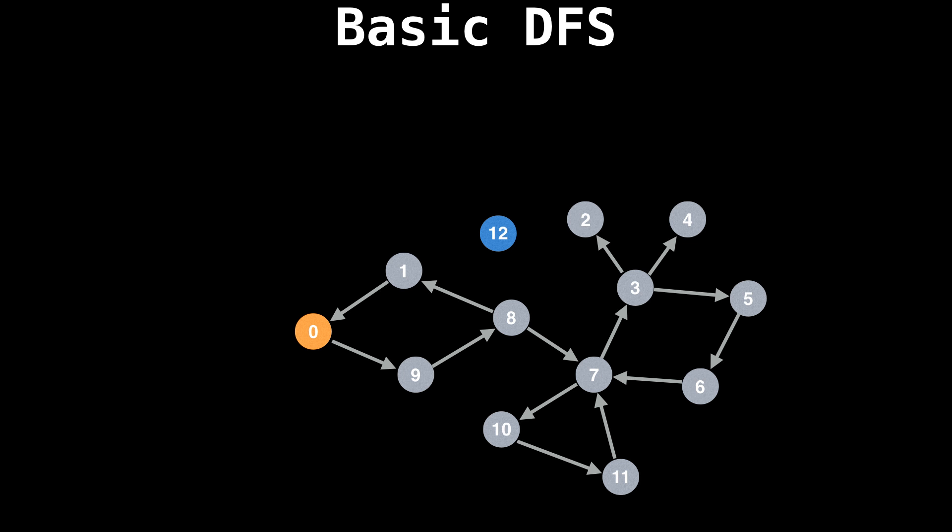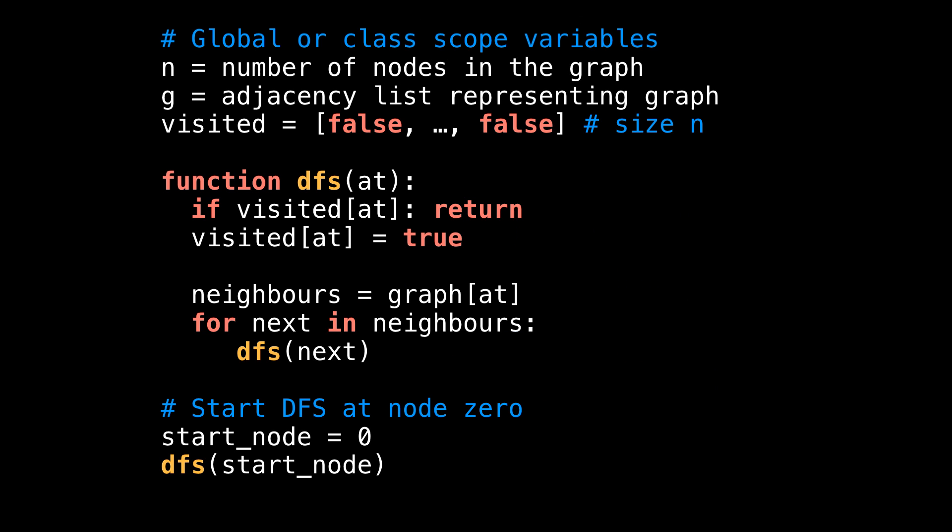This was one particular depth first search traversal, but as you saw, it could have gone a lot of different ways. So now let's look at some pseudocode for this depth first search to get a deeper understanding of how it works.